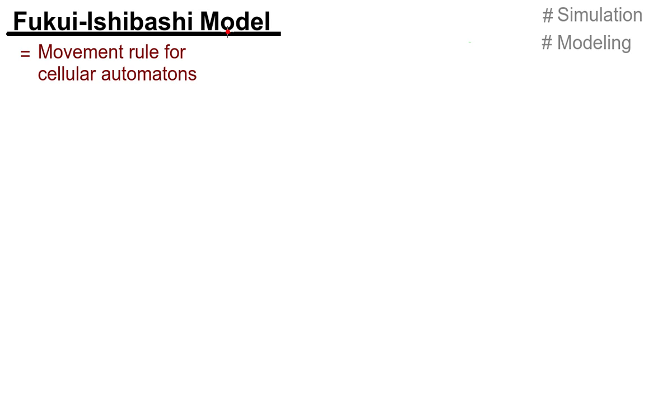Hello, the Fukui-Ishibashi model in simulation and modeling is a movement rule for a cellular automaton. You should know what a cellular automaton is, and it is based on rule 184. You should also know what rule 184 is.